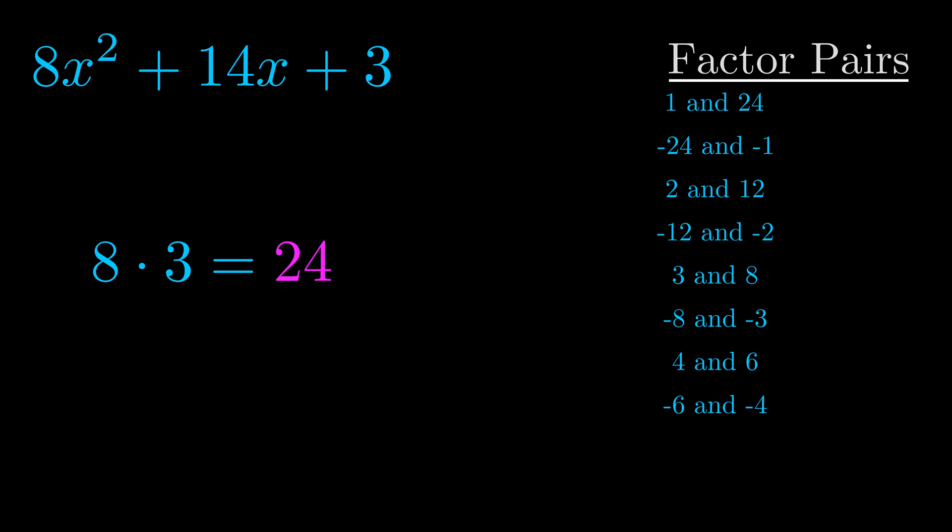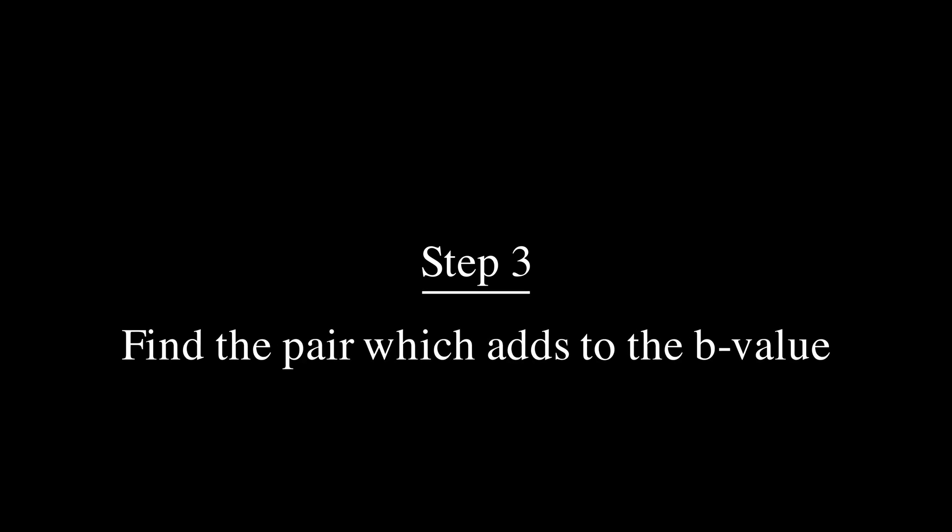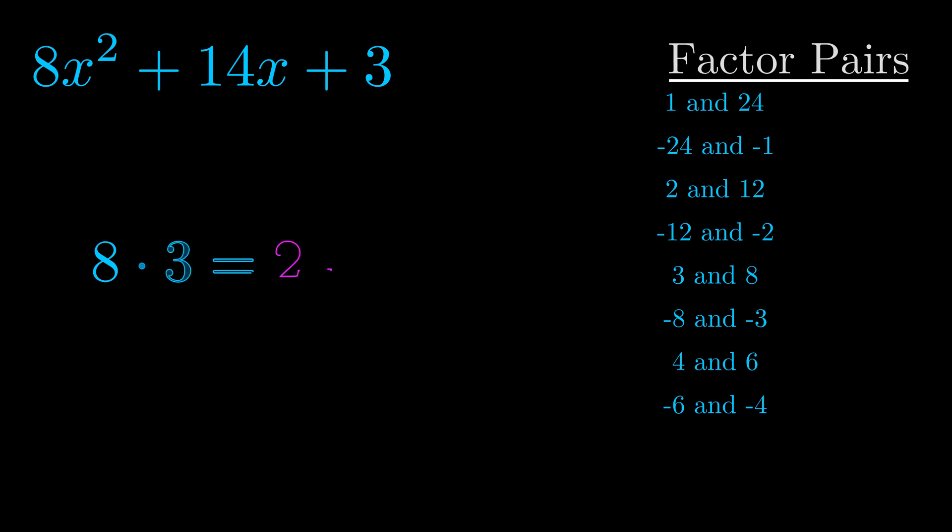Now once you have these factor pairs the goal is to find which of these pairs adds to the b value. The b value is the coefficient on the x term. That's the middle term, the one that we haven't done anything with yet. And really this is the only factor pair that we need.